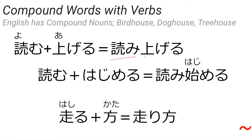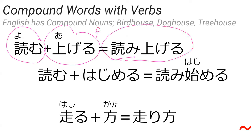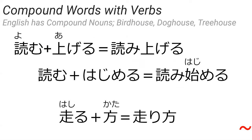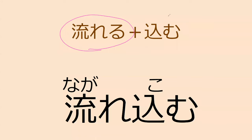For example, yomu means 'to read' and ageru means 'up,' so yomi ageru means 'to read out loud.' Or yomu and hajimeru — to start — gives yomi hajimeru, meaning 'to start reading.' Sometimes compound verbs don't show up in the dictionary, but you can guess by separating out the two verbs. Most of them are in the dictionary.